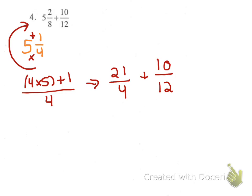As of right now, we don't have a common denominator, so we're going to have to make some changes. So, I'm going to multiply 4 by 3, but in order to do that, I also have to multiply 21 by 3.